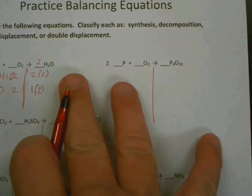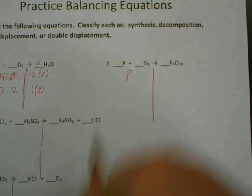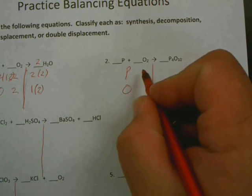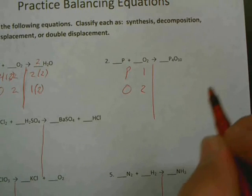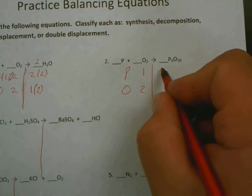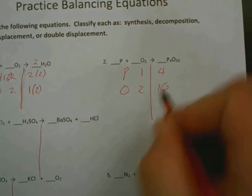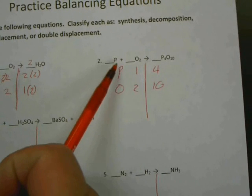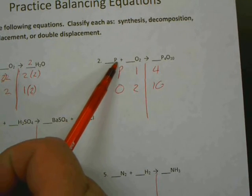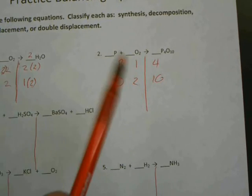Next one, number two. Bigger numbers, right? Must be harder. No — it doesn't matter how big those numbers are. We're going to write down what we have: we have a P, we have an O. The P has how many? One. O? Two. How many on this side? Four. Ten. So how do we have a match? The trick is this: there is no number besides this P, so anything I put in front of it is how many there are. We work on the O because it has a number, so it's going to be a little more tricky.